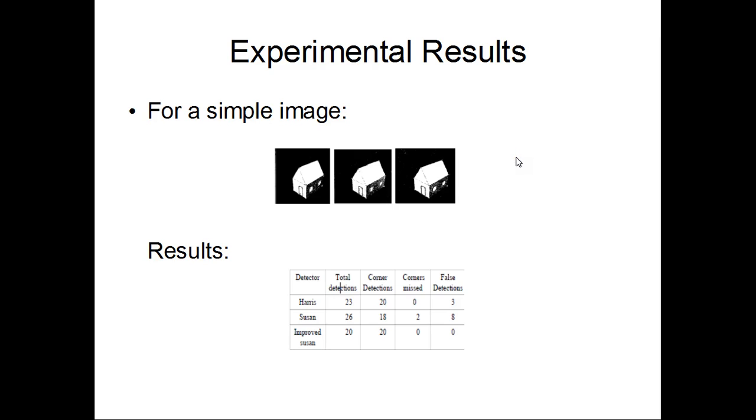When this experiment, the MATLAB code had been run and the data had been collected. This was run for three different images, three images, one separate image three times separately for each particular detector. This being for the Harris, this for Susan, and this is for the modified Susan. We can see for the simple image, the total number of detections and up to 1 for each detector has been mentioned in this table. There has been fairly less number of corners missed. We can see that Harris has missed zero, Susan has missed two, and improved Susan has missed one. And false detection: 3 for Harris, 8 for Susan, and 0 for improved Susan. This was for a simple image.